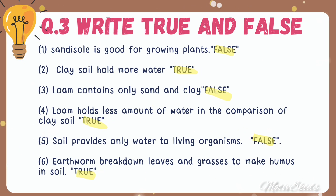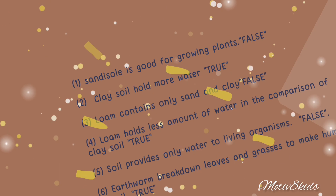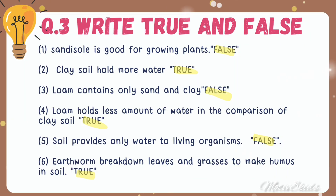Question number three: True and False. Sandy soil is good for growing plants — False. Clay soil holds more water — True. Loam contains only sand and clay — False. Loam holds less amount of water in comparison to clay soil — True. Soil provides only water to living organisms — False. Earthworms break down leaves and grasses to make humus in soil — True.